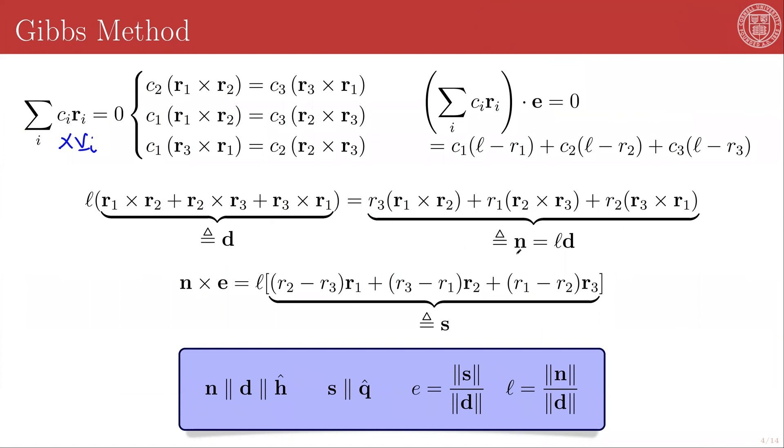We will call this set of vectors the vector d, and we will call this set of vectors n. And it is now incredibly important to notice that d and n lie in the direction of R sub i cross R sub j. All of the R sub i's are coplanar, so this is the direction orthogonal to the orbital plane, which means that d is parallel to n and n is parallel to h hat, the angular momentum direction.